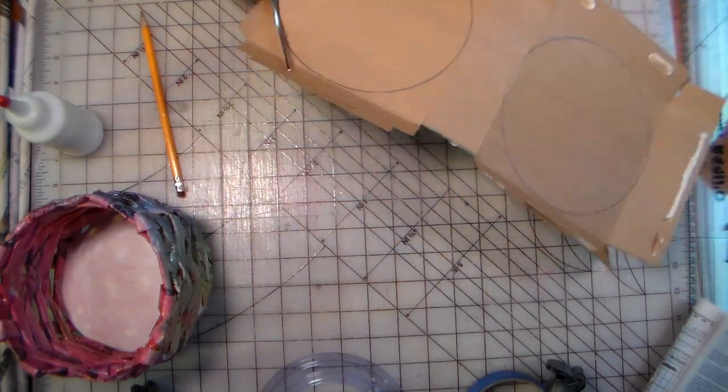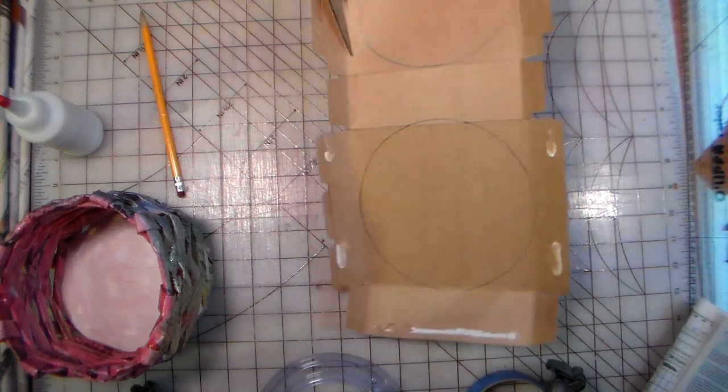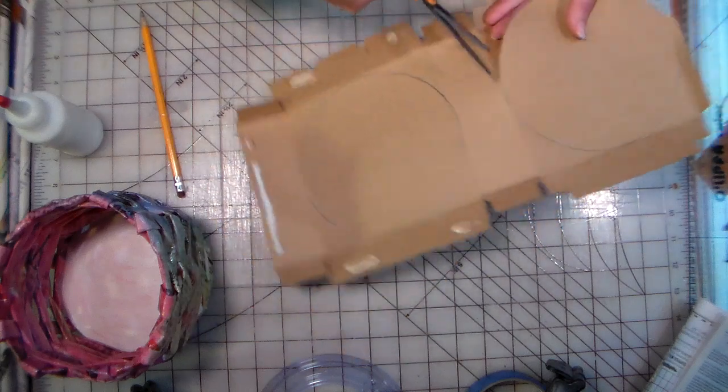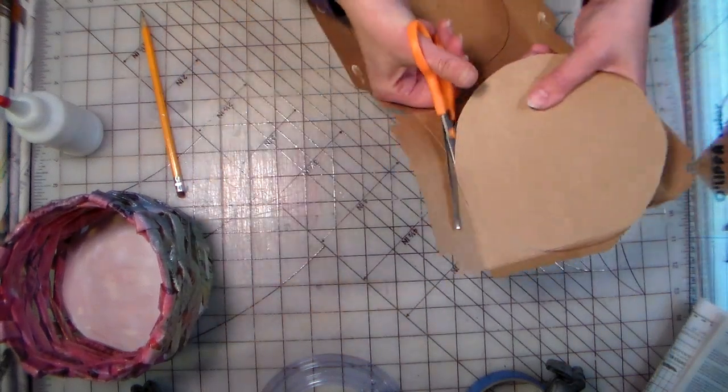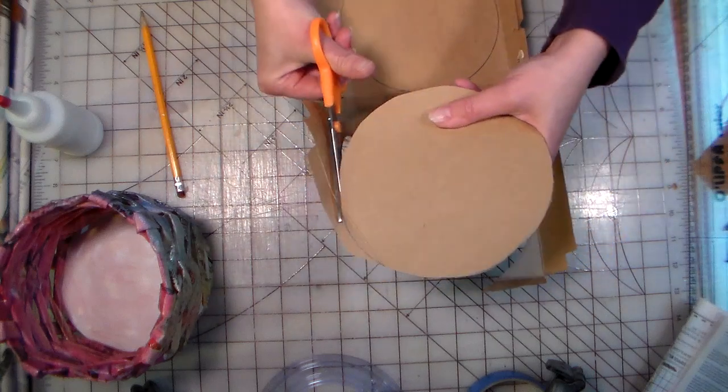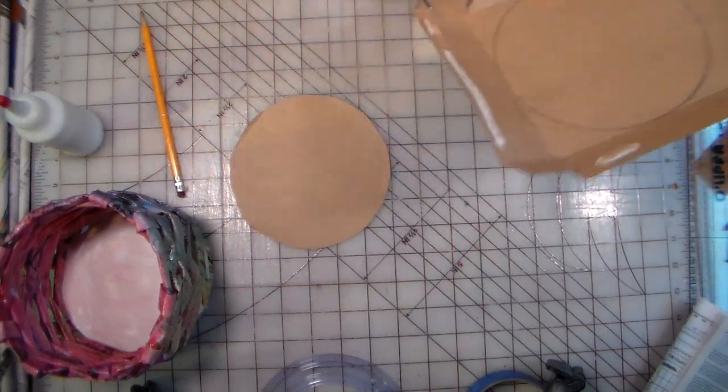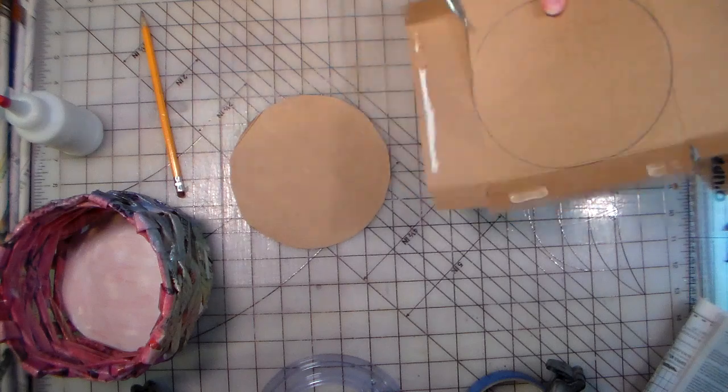And then just use your scissors to cut this out. We're cutting out two so that we'll have an extra sturdy bottom on our basket. Now really little kids probably need mom and dad's help for this, or big brother and big sister, that's fine too.